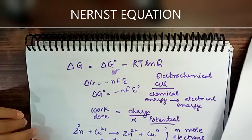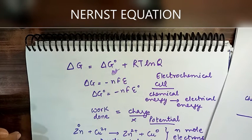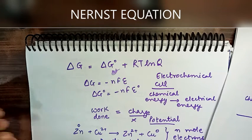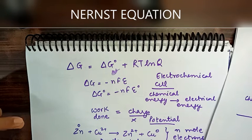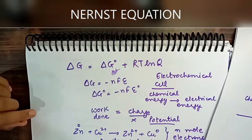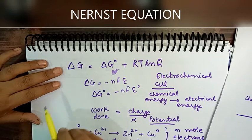The Nernst equation shows the electrode potential E under non-standard conditions. It is derived using a thermodynamic equation.